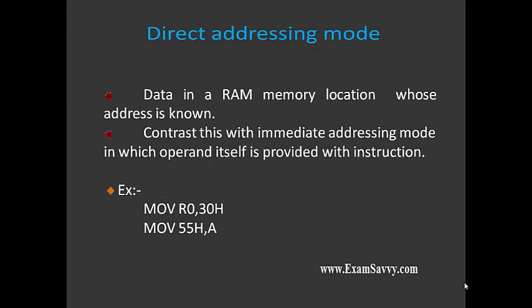The third one is direct addressing mode. This is just opposite to immediate addressing mode. In immediate addressing mode, we are moving the data immediately with some registers. But here, at some address, some contents will be there, and those contents will be moved to the register. So we can interact directly with an address and store the data from RAM memory location. For example: MOV R0, 30H — here 30H is an address, and whatever data is present at that address will be stored in register R0. Similarly, in the second example, the data in the accumulator will be moved to memory location 50H.